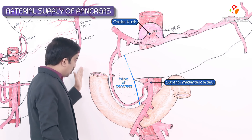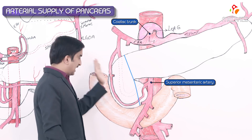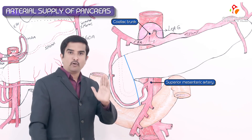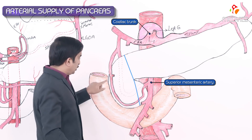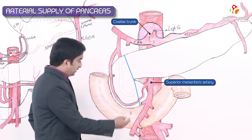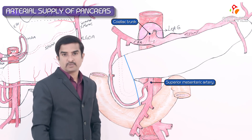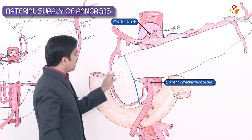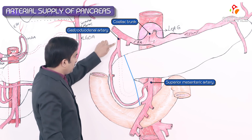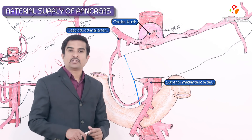The head of the pancreas and the adjoining part of the duodenum are supplied totally by four arteries — two coming from the celiac trunk and two coming from the superior mesenteric artery. The two arteries from the celiac trunk arise via the gastroduodenal artery.